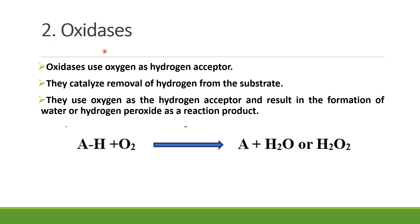The second category of oxidation-reduction enzymes are the oxidases. These oxidases also use oxygen as the hydrogen acceptor. They catalyze reactions involving removal of hydrogen from the substrate. If AH is the substrate, these enzymes catalyze such that hydrogen is removed and oxygen becomes the hydrogen acceptor, resulting in the formation of either water or hydrogen peroxide along with the product.